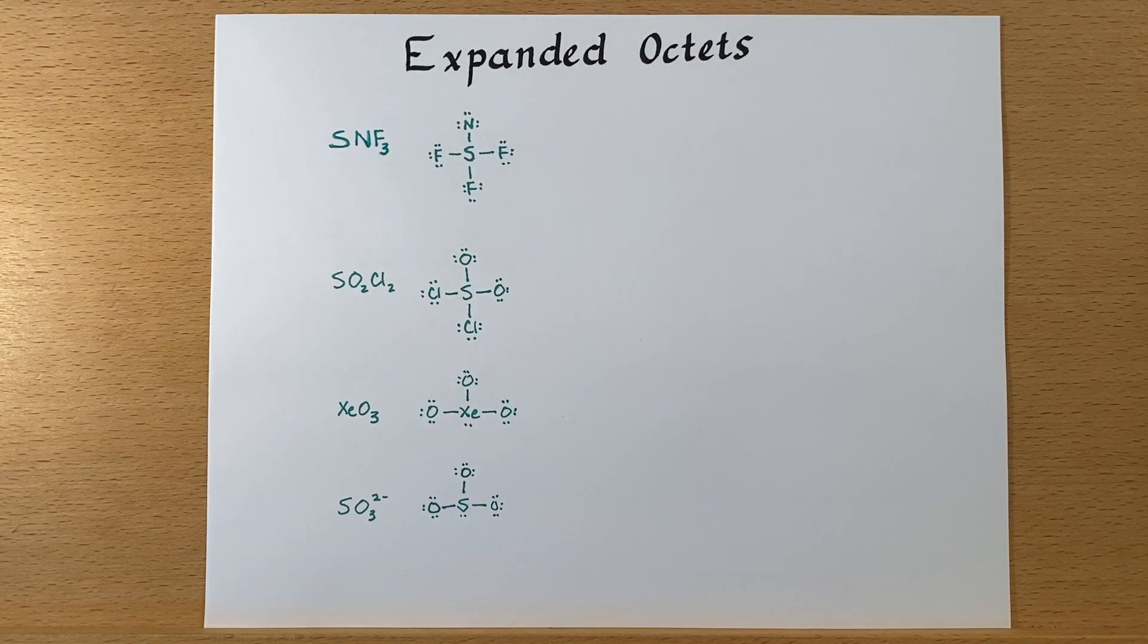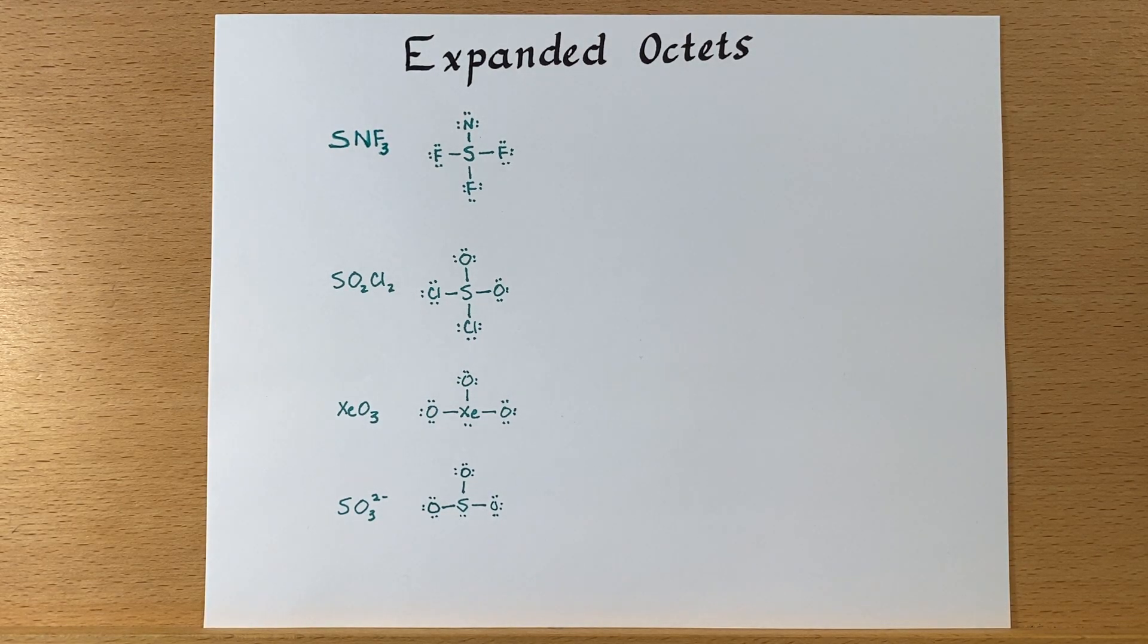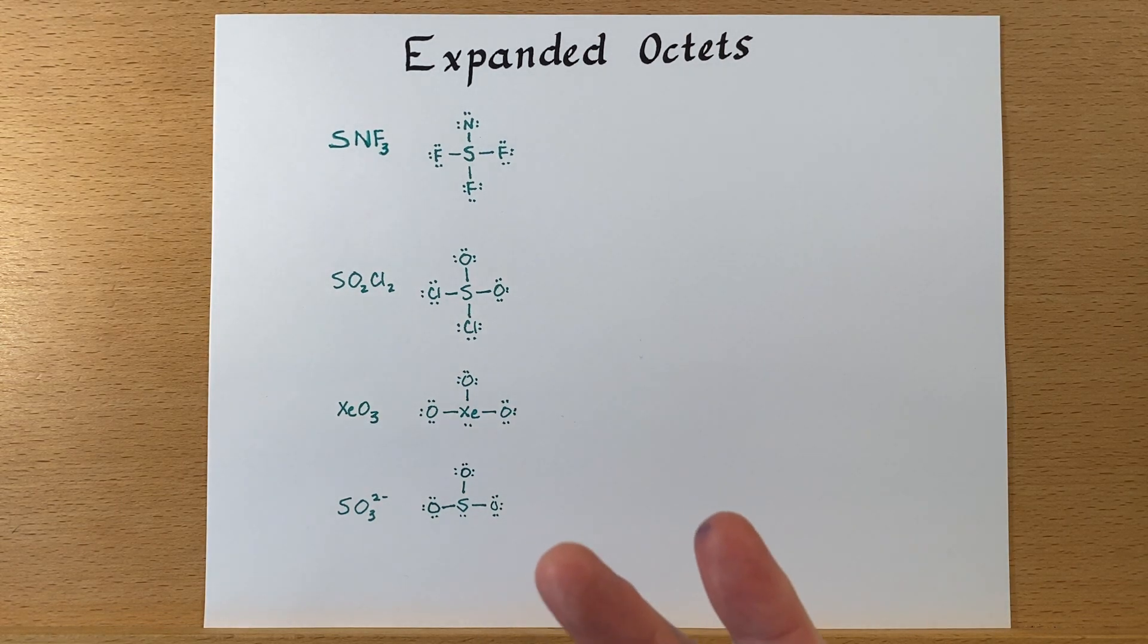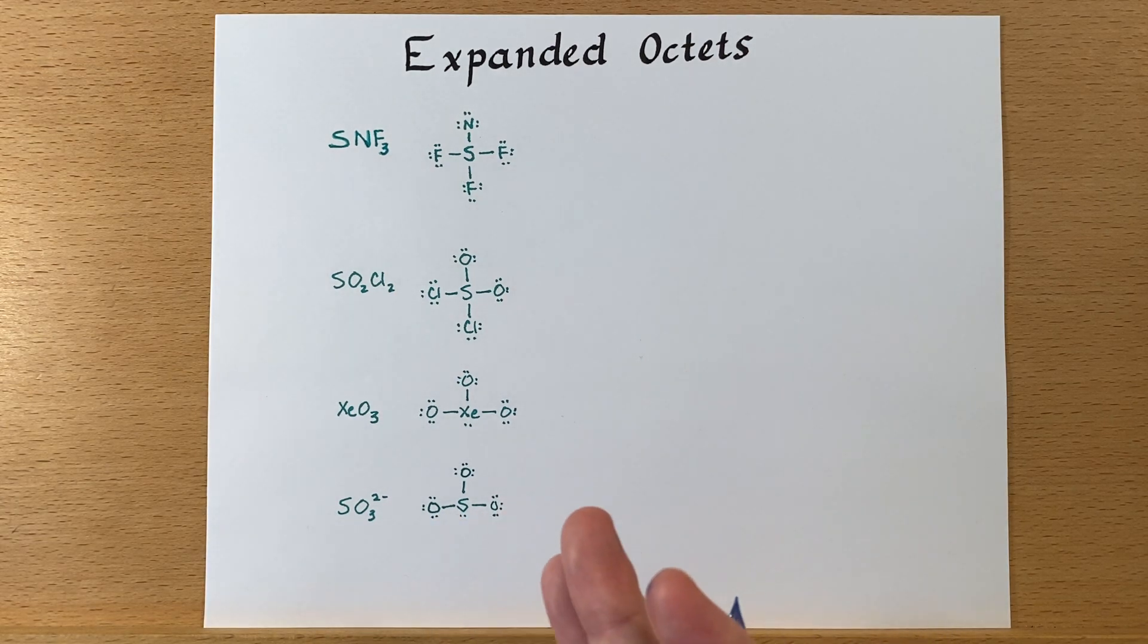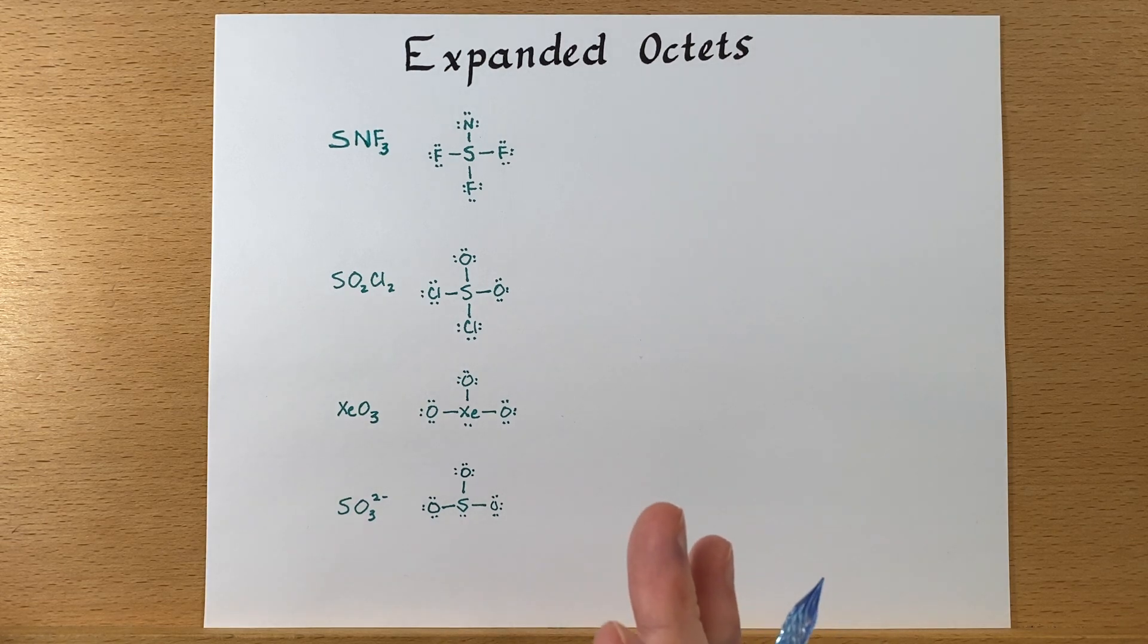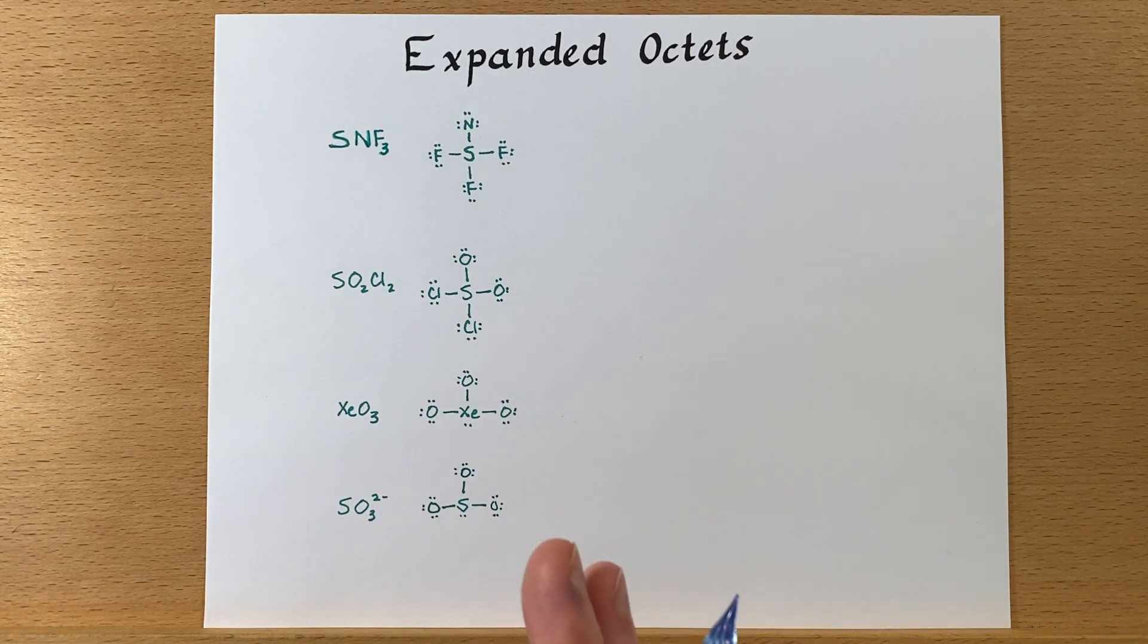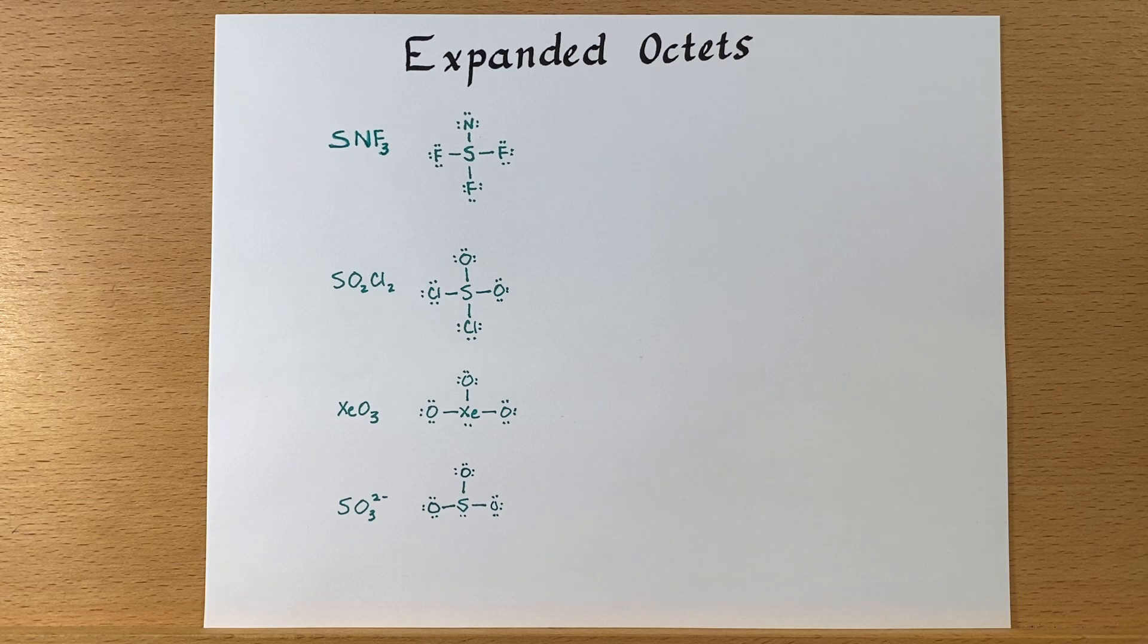Let's look at some other Lewis structures and explore the possibility of an expanded octet. Remember, the octet rule, eight electrons around one atom, is really for carbon, nitrogen, oxygen, and fluorine. In some cases halogens and other elements will follow the octet rule occasionally, but there will be times when it gets broken.